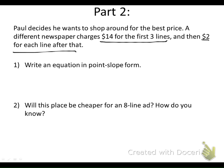We've got the same independent variable and dependent variable as last time. Our independent variable is the number of lines, that's our X value, and our dependent variable is the cost, that's our Y value. If it's $14 for the first three lines, that means when X is 3, Y is 14. When the number of lines is 3, the cost is $14. But then it's $2 for each line after that, so that means our slope or our rate of change is 2.